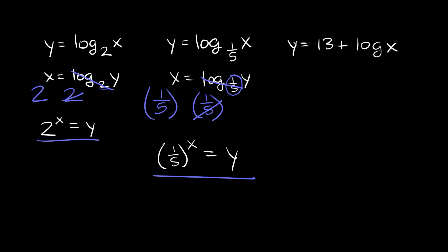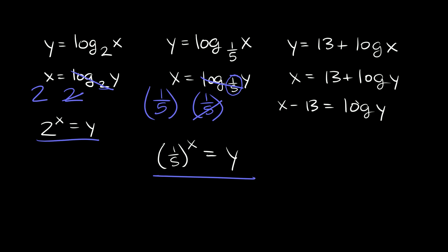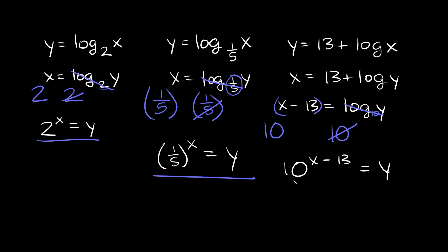This one is a little bit different: y is equal to 13 plus log of x. We rewrite this as x is equal to 13 plus log of y. First we move the 13 to the other side, so x minus 13 is equal to the log of y. Remember, whenever you have log of just some number, it's implied that the base is 10. So in order to get rid of this log base 10, we raise both sides as exponents of 10: 10 raised to the x minus 13 is equal to 10 raised to log base 10 of y. These cancel out and we're left with y is equal to 10 raised to the x minus 13.